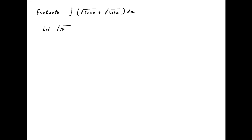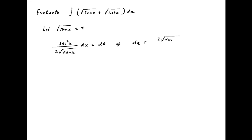Let's assume that square root of tan x is equal to t. Differentiating both sides we get, in the denominator 2 times square root of tan x, and applying chain rule the numerator is sec squared x. This multiplied by dx is equal to dt, and therefore dx is equal to 2 times square root of tan x times dt divided by sec squared x, which can be written as 1 plus tan squared x. This can be expressed in terms of t as 2t divided by 1 plus t to the power 4, times dt.